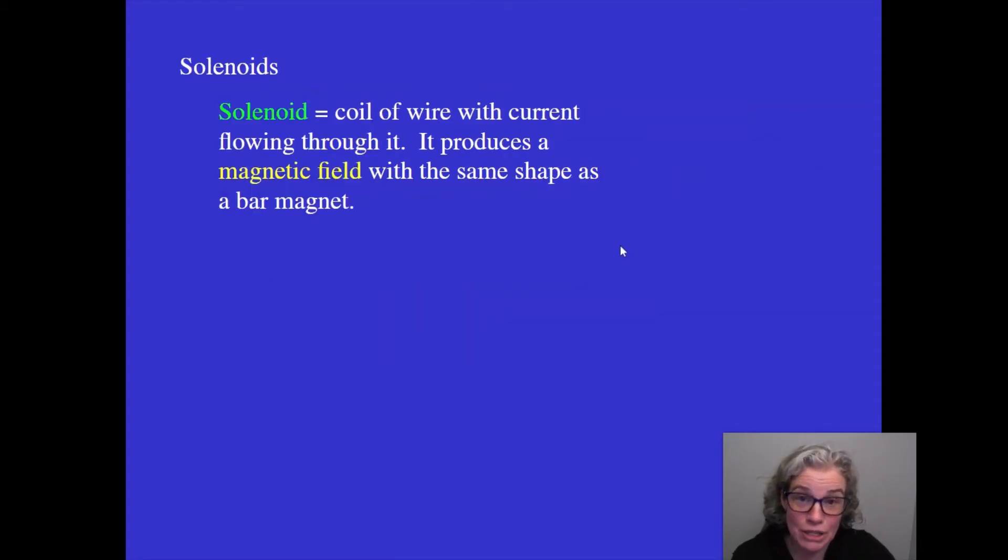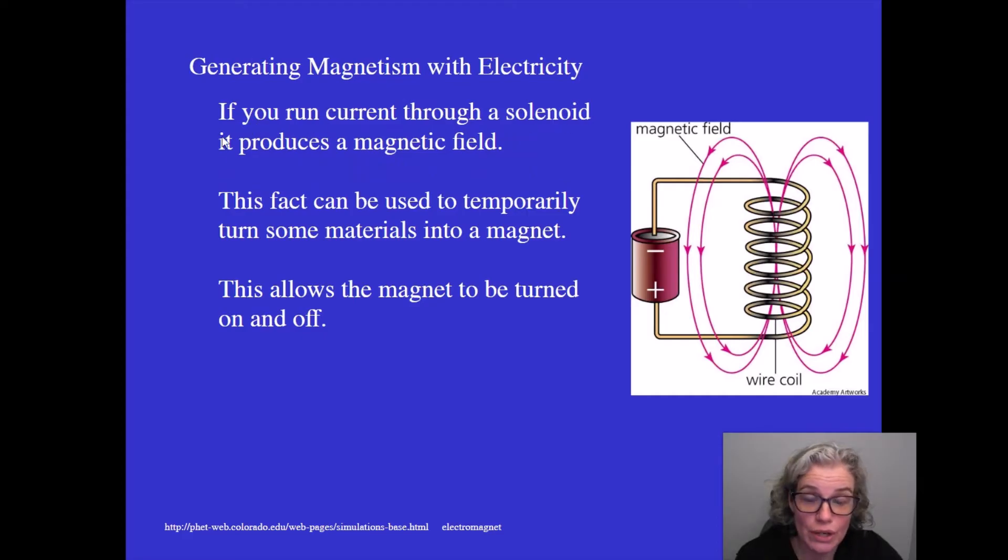A solenoid is a special name for a coil of wire that has electricity flowing through it. If you run current through a solenoid, it produces a magnetic field. See here, it's drawn in red. This fact can be used to temporarily turn some metals into a magnet. And this allows the magnet to be turned on and off.